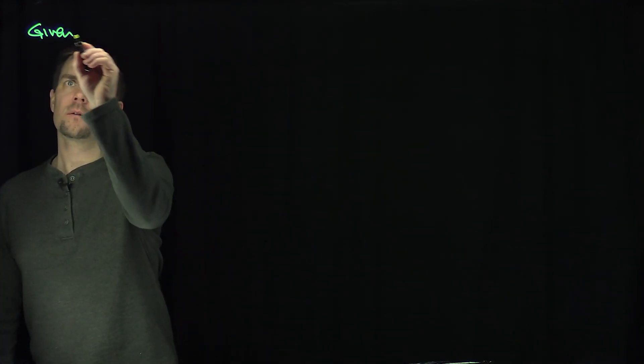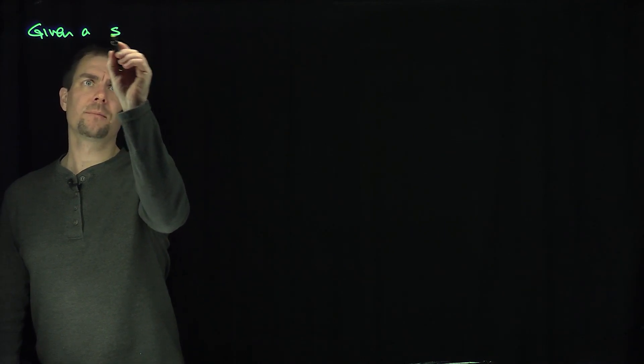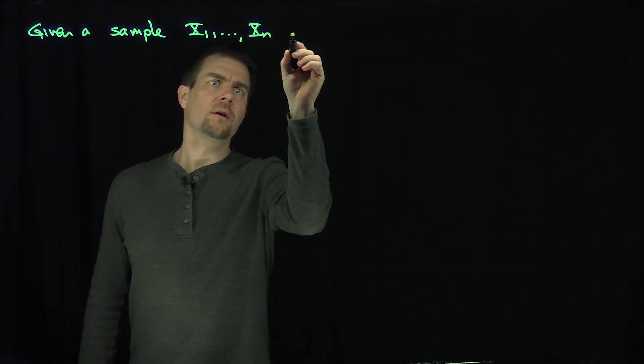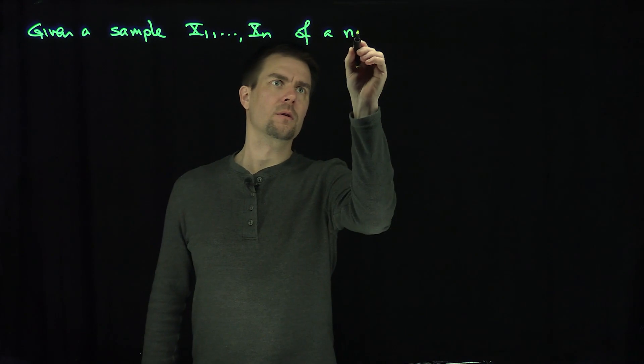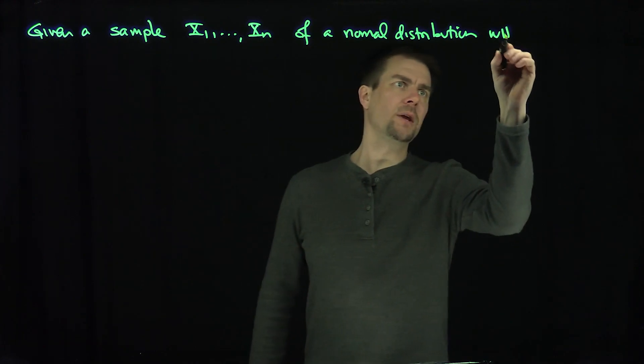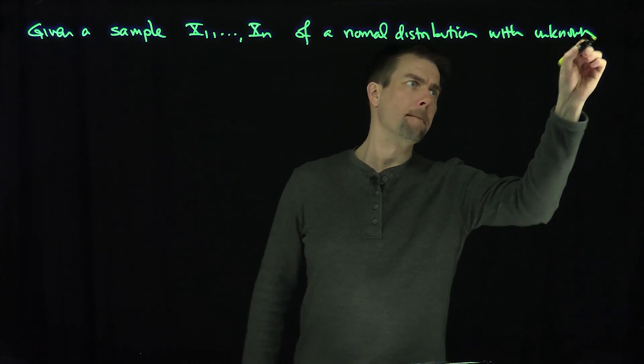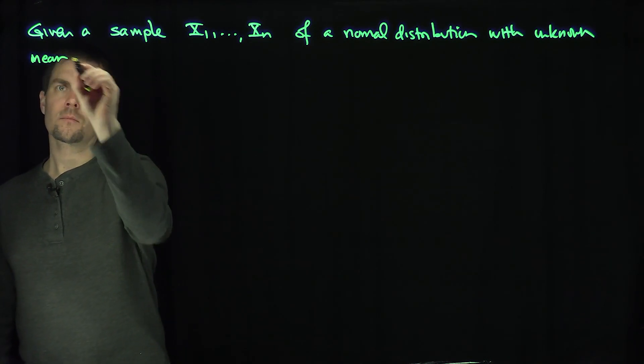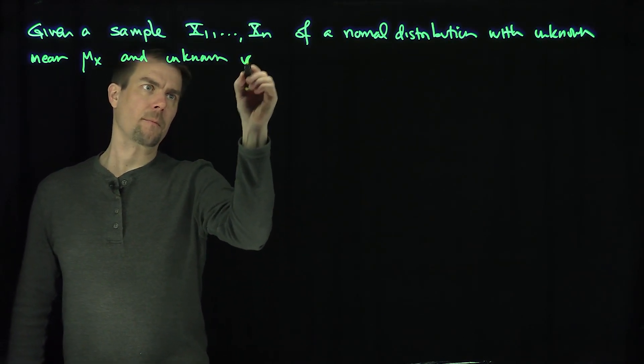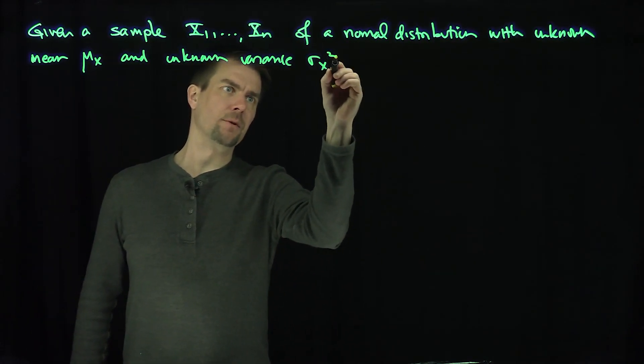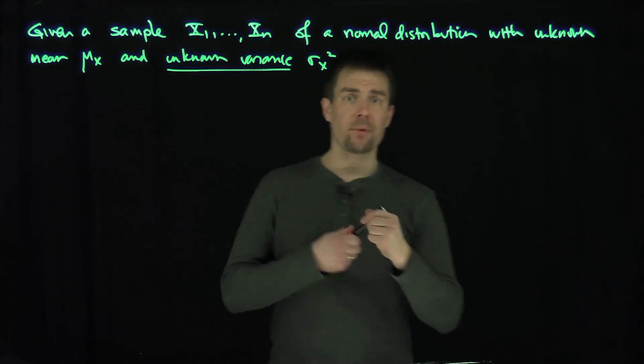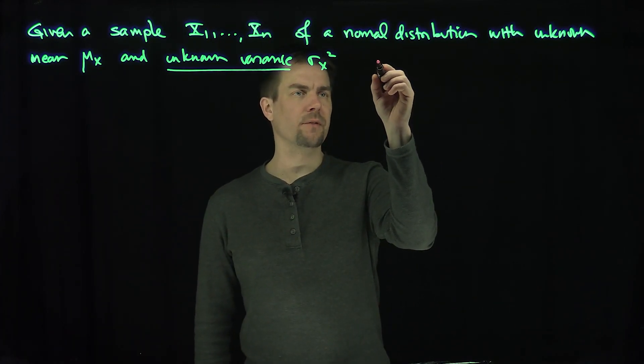So let's be given a collection, a sample x1 through xn, of a normal distribution with unknown mean mu x and unknown variance. In previous examples, we've been dealing with a case of known variance, but now we have an unknown variance. So with unknown variance, we can use a sample variance. So we can consider the sample variance.